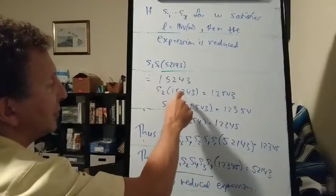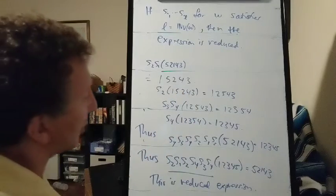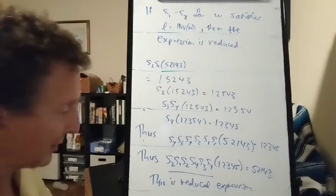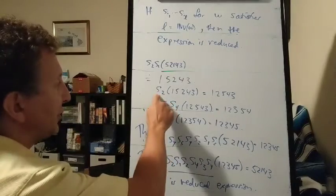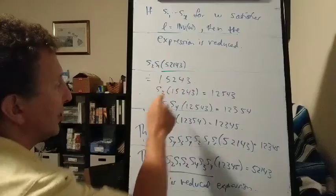Then when we move the 2, since the 2 is now smaller than all the other letters that it might pass, we did one move, we used one generator, and we undid one inversion.